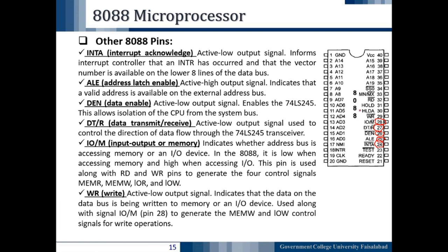The next pin is WR bar — the Write pin — pin number 29. The bar on WR indicates it is an active low output signal. It indicates that the data on the data bus is being written to memory or an IO device. It is used along with IO/M bar, pin number 28, to generate the memory write or IO write control signals for write operations.